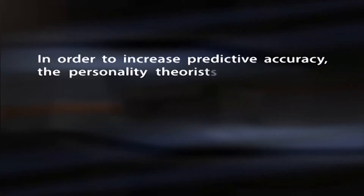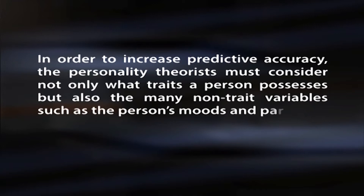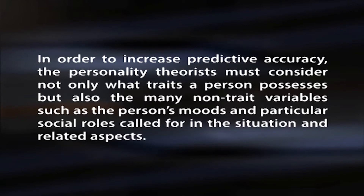More specifically, this formula signifies that what the person does, thinks, or verbalizes is some unspecified function of the stimulus situation at a given moment in time and also of the individual's personality structure. The specification equation shows that the person's specific response to any given situation is a function of all the combined traits relevant to that situation, with each trait interacting with situational factors. To increase predictive accuracy, the personality theorist must consider not only what traits a person possesses, but also non-trait variables such as moods and particular social roles.